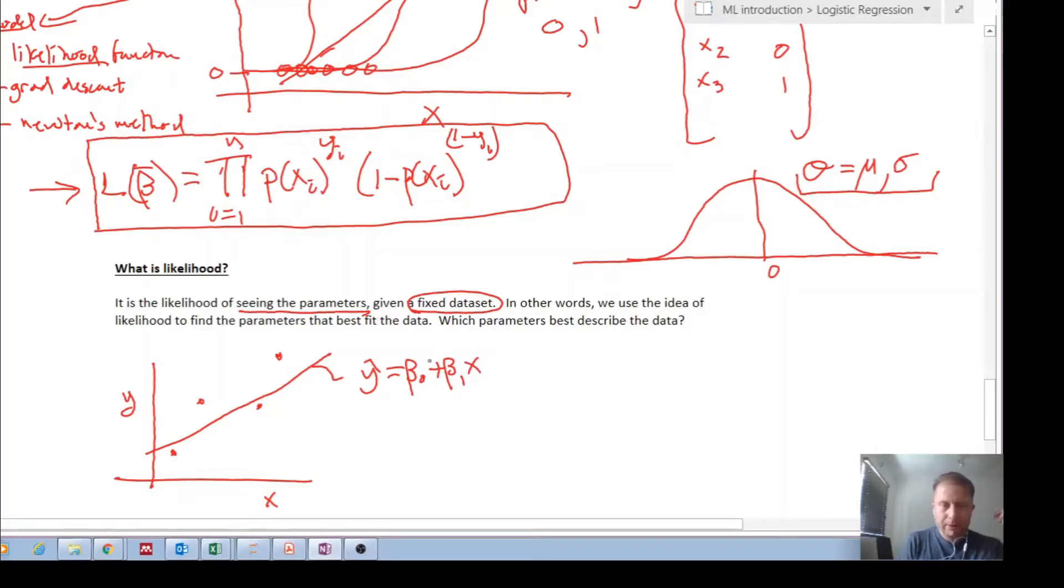So we're trying to find, we have the actual data set, and we're trying to find the parameters that best describe that data set, or that we can say the data set comes out of a model with those parameters.